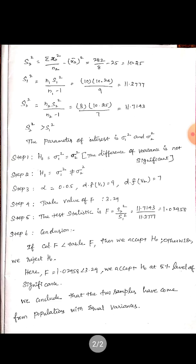Then find s2 square: summation of X2 square divided by N2, where N2 equals 8, minus X2 bar whole square for sample 2. Substituting, we get s2 square equals 10.25.